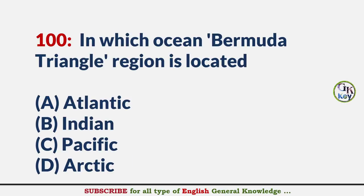In which ocean is the Bermuda Triangle region located? Answer A: Atlantic.